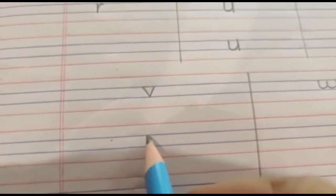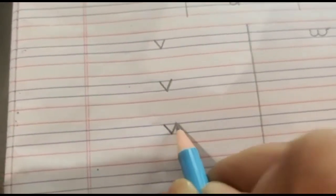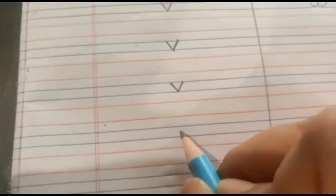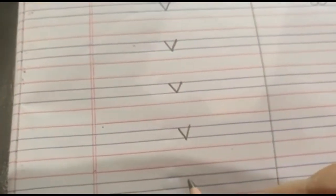Now let's write letter V. Start from the first blue line to the second blue line, slanting line down, slanting line up, slanting line down, slanting line up. V says V. V says V.